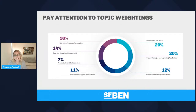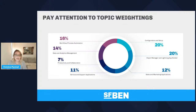Pay attention to topics and weightings. Configuration and setup and object manager and Lightning builder both account for 20% each — that's a lot of the exam. We're aiming to get 39 out of 60 questions right to pass. Focus on those big sections with the heaviest weightings, especially if you're short on time. If you're challenging yourself to pass quickly, don't focus as much on the smaller weighted sections.